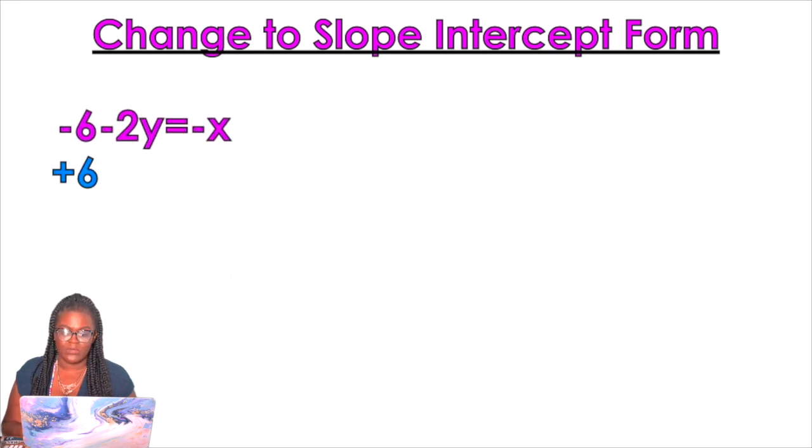Okay, so now what if they just look crazy, like what if they're not in any specific form, but you want to put it in slope intercept form? What you're going to do is isolate y. So in this case that means move that 6 over to the other side and now y is almost alone.